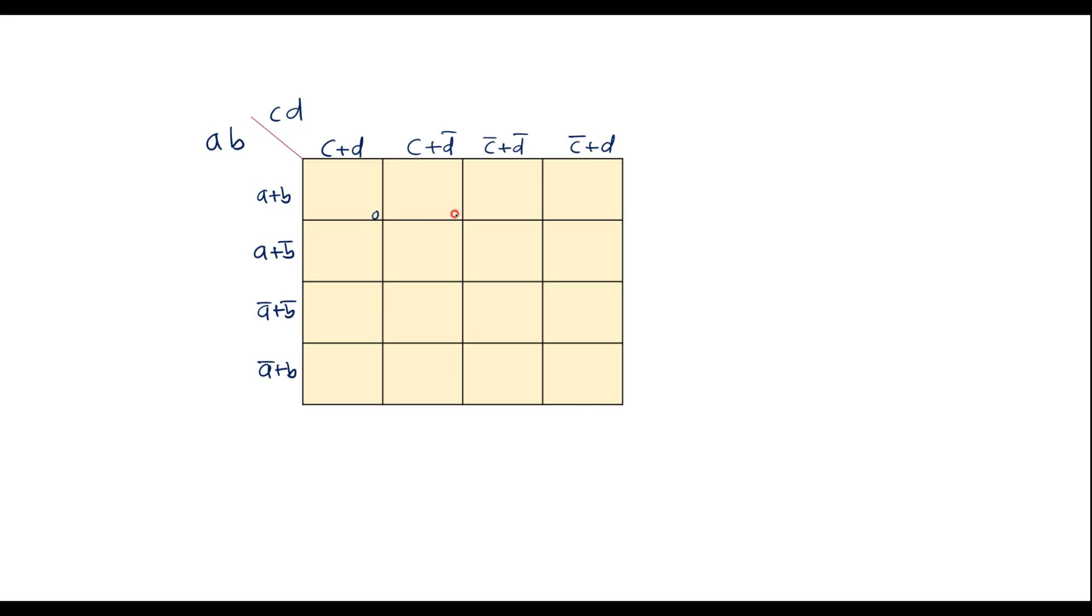The cell numbers are 0, 1, 2, 3, this is 4, 5, 6, 7, this is 8, 9, 10, 11, we have 12, 13, 14 and 15.